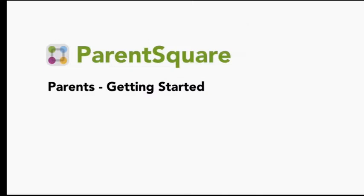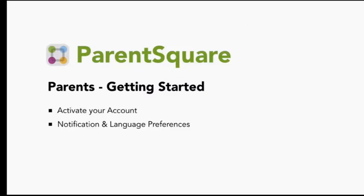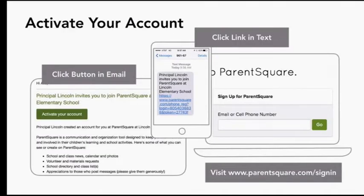The first part of this video will help you get started. We will show you how to activate your account and set your preferences. You will need to activate your account. You should have received an email or text from ParentSquare with instructions on how to activate your account. If you did not receive anything from ParentSquare, please visit ParentSquare.com and click Sign In. Simply enter your email or cell phone number here and click Go to receive the activation email or text. Now you can create your password and log into ParentSquare.